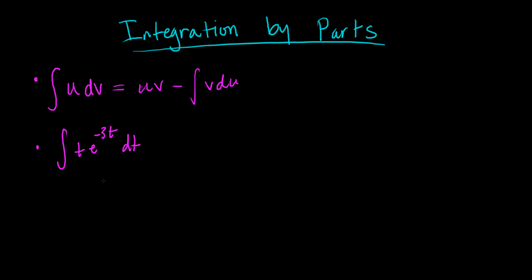So quickly, we need to try to rule that out first. If we did a u-substitution, what could we do? We have two functions here. Could we let u equal t? No — in u-substitution we don't just let u equal t or u equal x, that's not helpful. If u equals t, you'd have u times e to the negative 3u, which has the exact same form. That didn't get you anywhere.